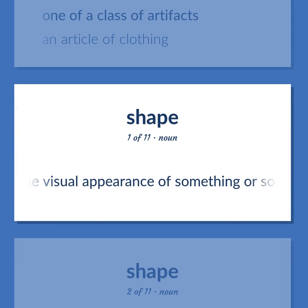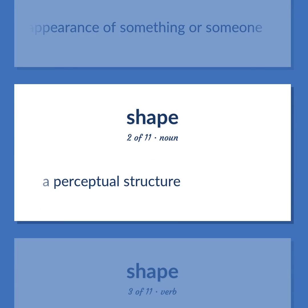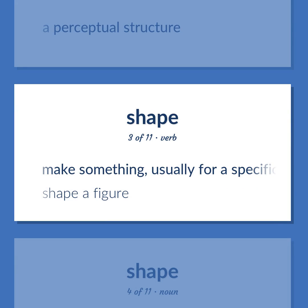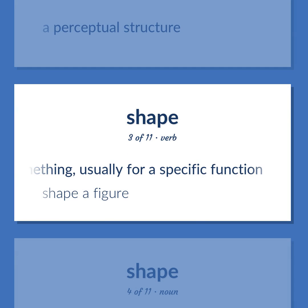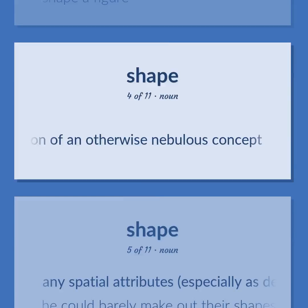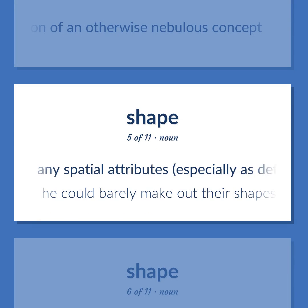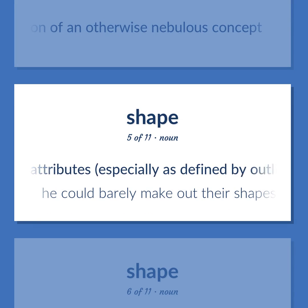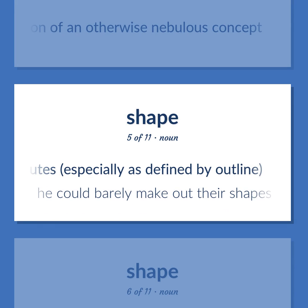Shape: The visual appearance of something or someone. A perceptual structure. Make something, usually for a specific function. Shape a figure. A concrete representation of an otherwise nebulous concept. Any spatial attributes, especially as defined by outline. Example: He could barely make out their shapes.